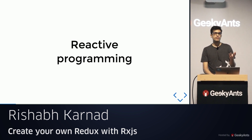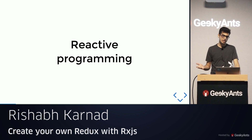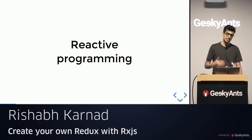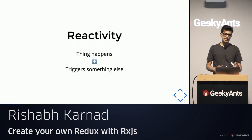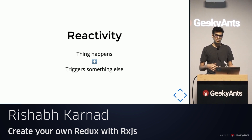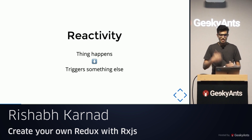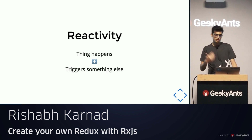To begin, reactive programming is just another paradigm, like functional programming or object-oriented programming. The point of view of programming in a reactive style is slightly different — you write your code in such a way that if something happens, you automatically trigger something else.